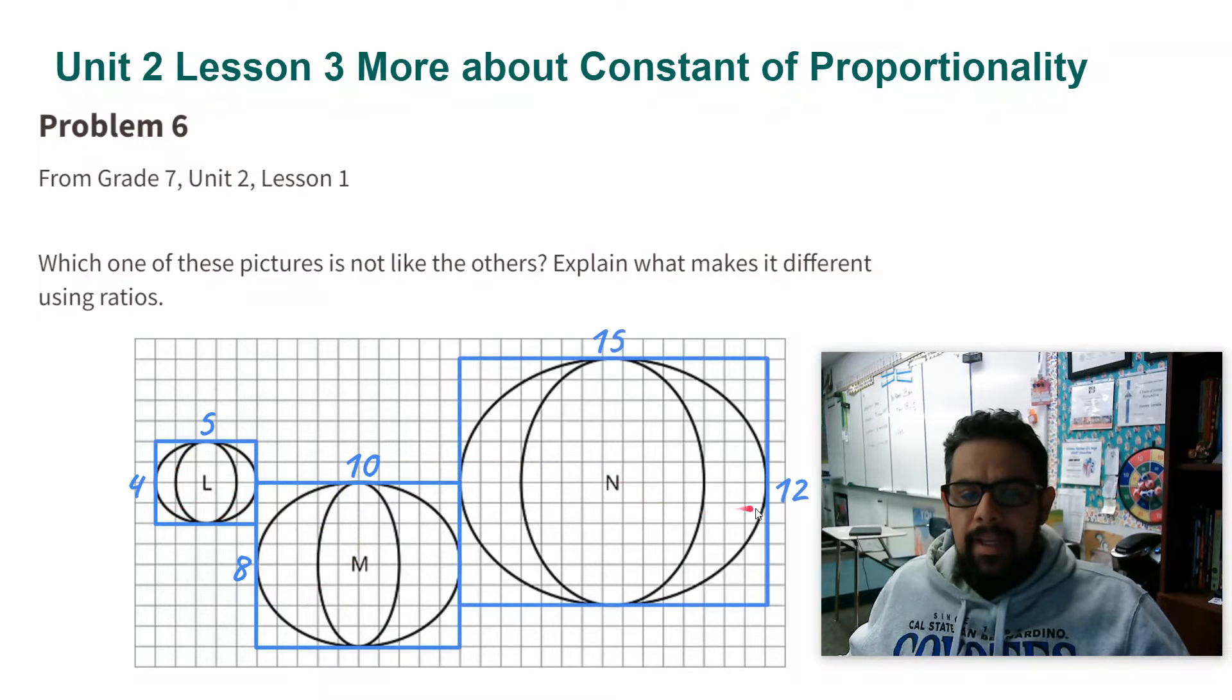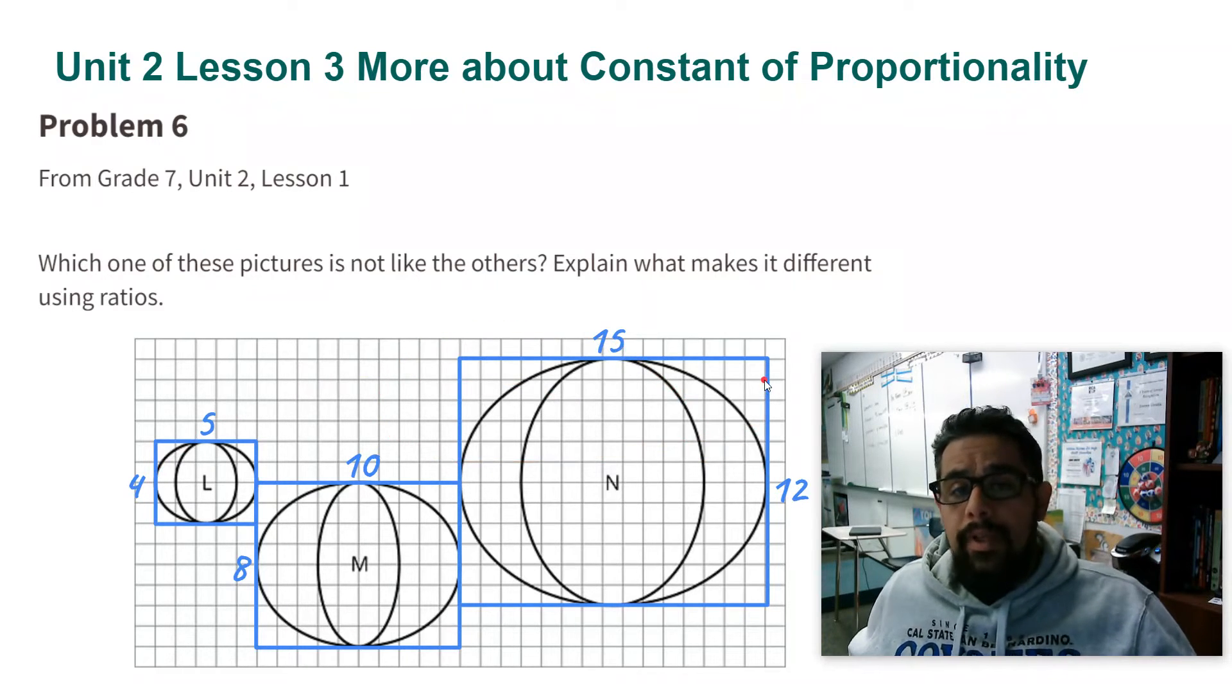And for N it's 12 to 15. So we have all these ratios and these are all the same ratio, 4 to 5. I just multiply this one times 2 and I get 8 to 10. I can do this one times 3 and that will give me this one, 12 to 15.